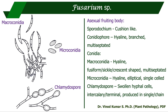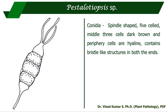Fusarium causes wilt disease. It also produces an asexual fruiting body called a sporodochium — a cushion-like structure. The conidiophores are hyaline, branched, and multiseptate. They produce both macroconidia and microconidia. Macroconidia are hyaline, fusiform or sickle-shaped (crescent-shaped), and multiseptate. Microconidia are hyaline, elliptical, and single-celled. Chlamydospores are swollen hyphal cells that may be intercalary or terminal, produced singly or in chains.